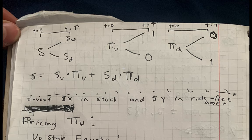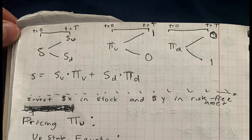Now we can introduce the concept of arrow securities. We have π_u, which you can think of as the up state arrow security — you do well in the up state. And π_d is the down state arrow security, where you do well in the down state. In the up state, when the stock goes to s_u, π_u goes to one and π_d goes to zero. In the down state, when the stock goes to s_d, π_u goes to zero and π_d goes to one.